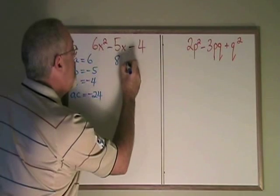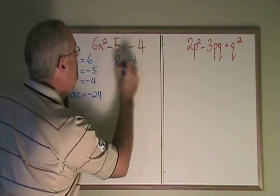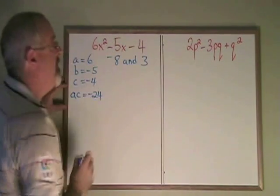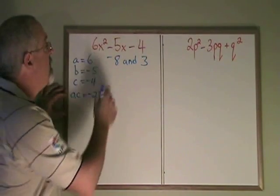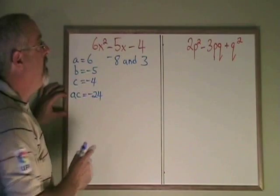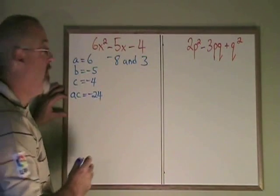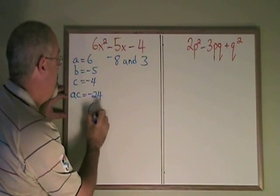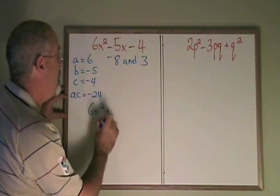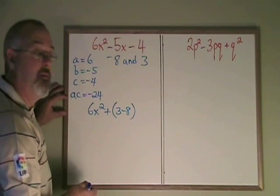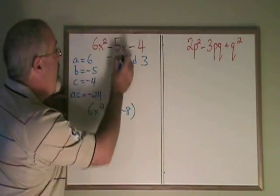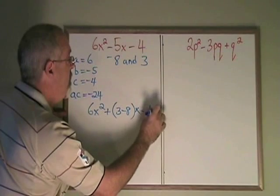So we write those, negative 8 and 3. Now we rewrite our expression so that instead of negative 5, we write both of these numbers in a bracket. It looks like this: 6x squared plus 3 minus 8. I like putting the positive one first when I have a positive one. x minus 4.